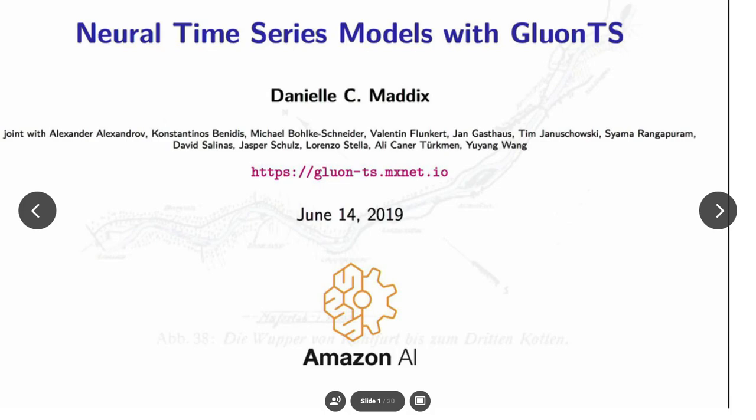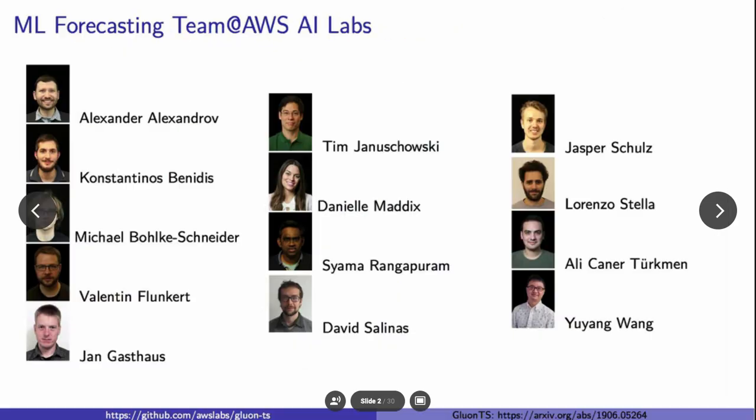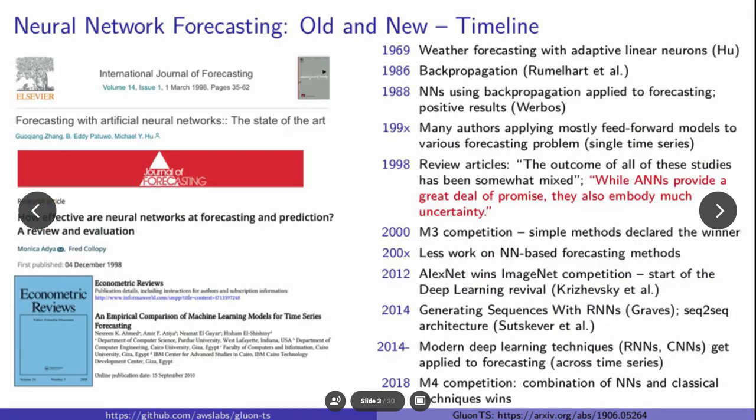You'll see the link here, which will provide you with APIs, tutorials, as well as the GitHub link. Here's an overview of our team at Amazon. We're in the ML forecasting team, spread throughout Berlin and the Palo Alto office within AWS AI lab, under Tim Janikowski. This is joint work with my whole group.